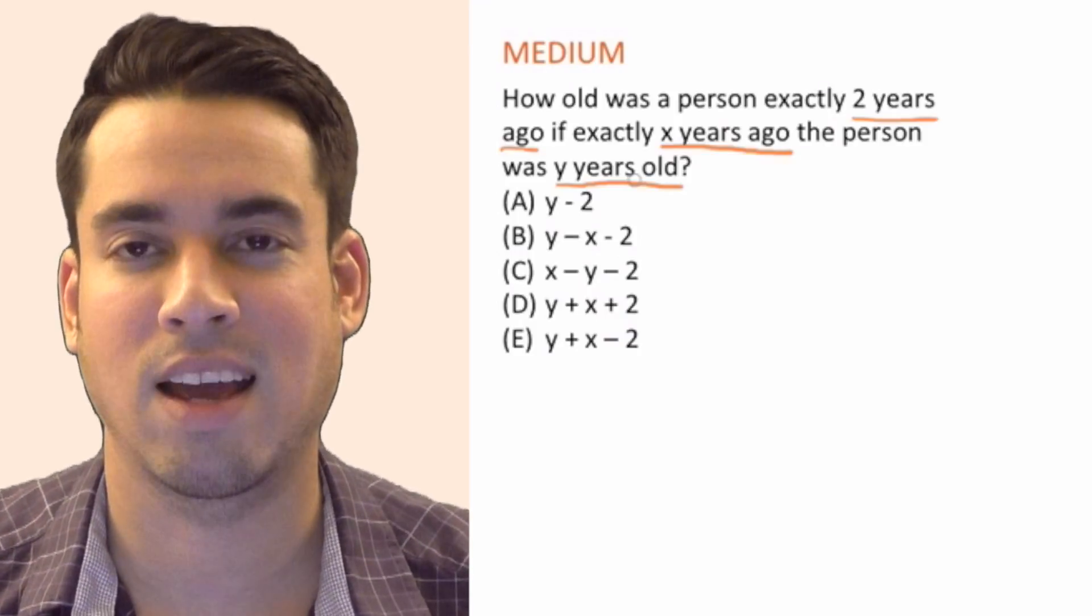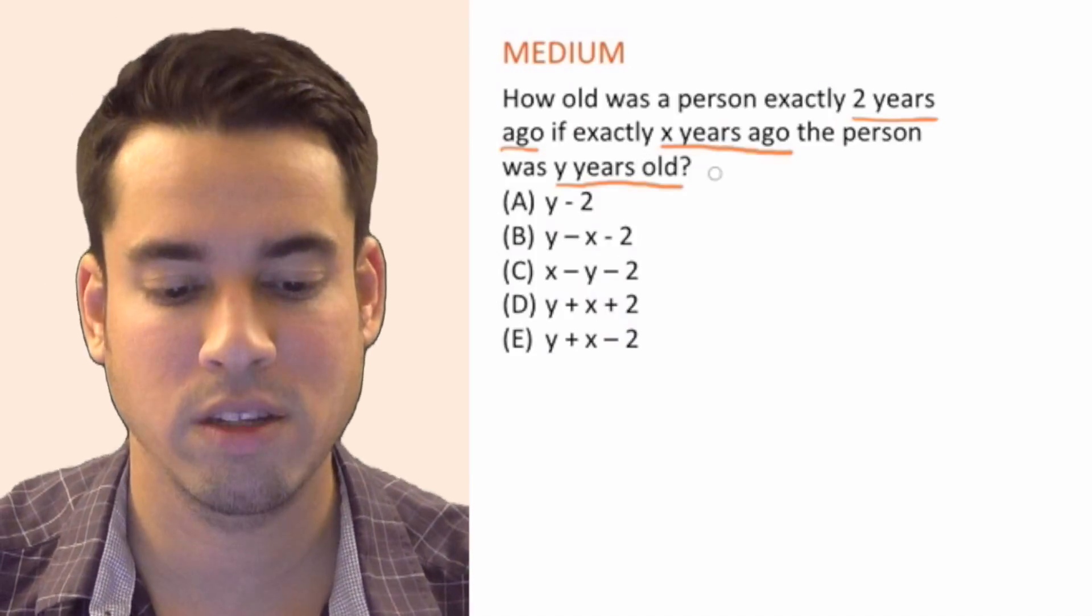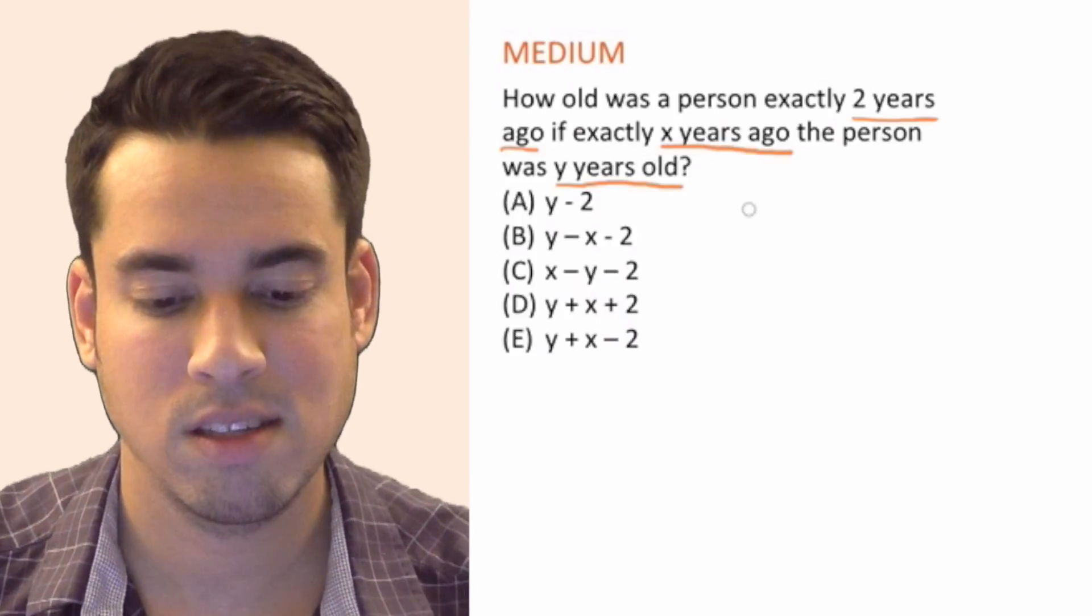Okay, let's first start by figuring out how old is this person today, because once we figure that out all we have to do is subtract two and we're golden. So how old are they today? Well, it doesn't say but we know they were Y years old at some point and this was X years ago.